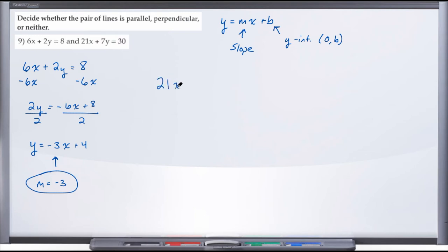So 21x plus 7y equals 30. And solving for y, we'll subtract 21x from both sides, leaving us with 7y equals negative 21x plus 30. And now solving for y,